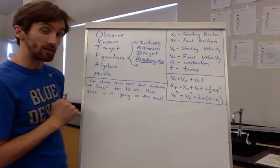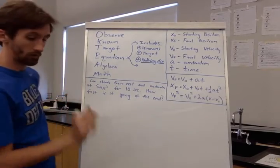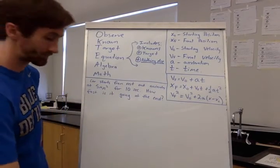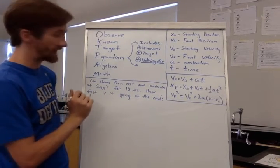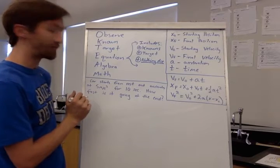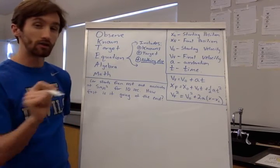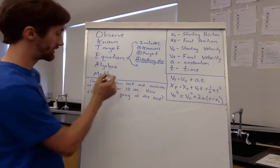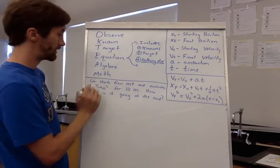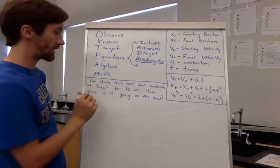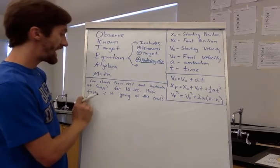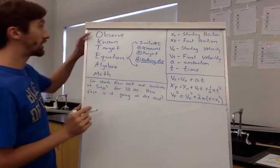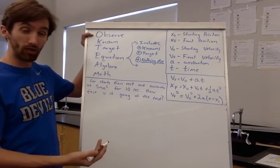Let's walk through the first example problem. At the bottom of your notes pack where it says example problem, it says: a car starts from rest and accelerates at five meters per second squared. Your notes actually say meters per second, but that's a typo — acceleration is meters per second squared, so you want to add that in. It accelerates at five meters per second squared for 10 seconds. How fast is it going at the end of those 10 seconds? I've already done the first step, Observe — I've read through the problem and I understand what's happening.